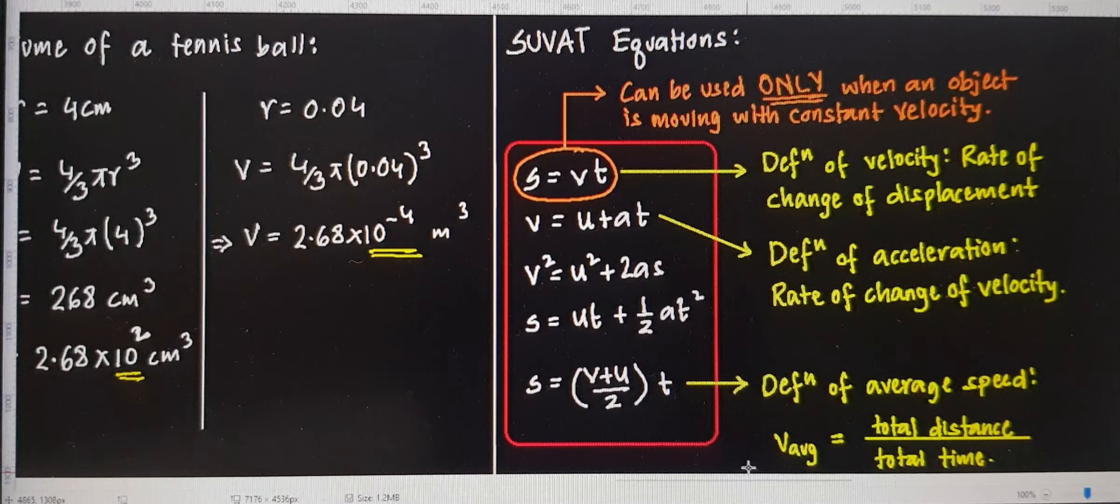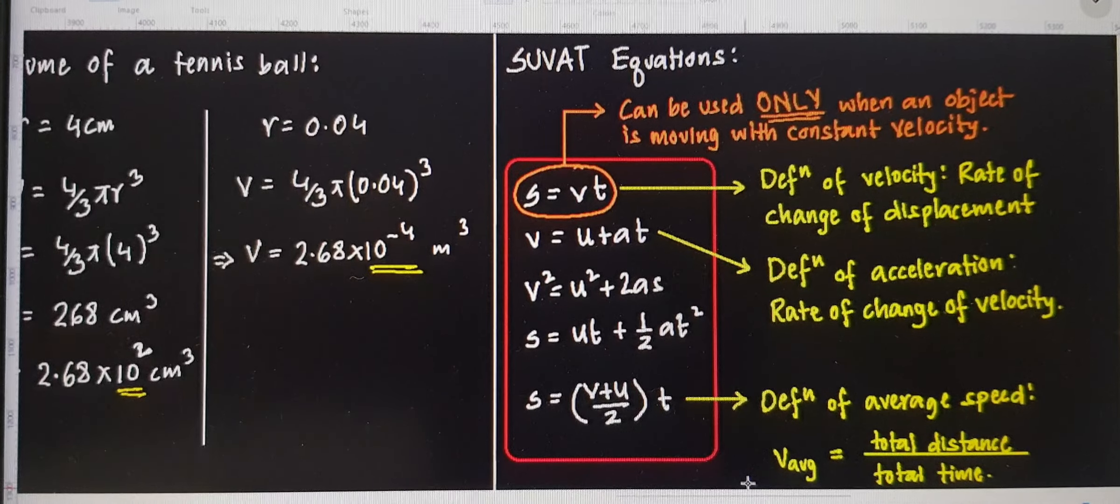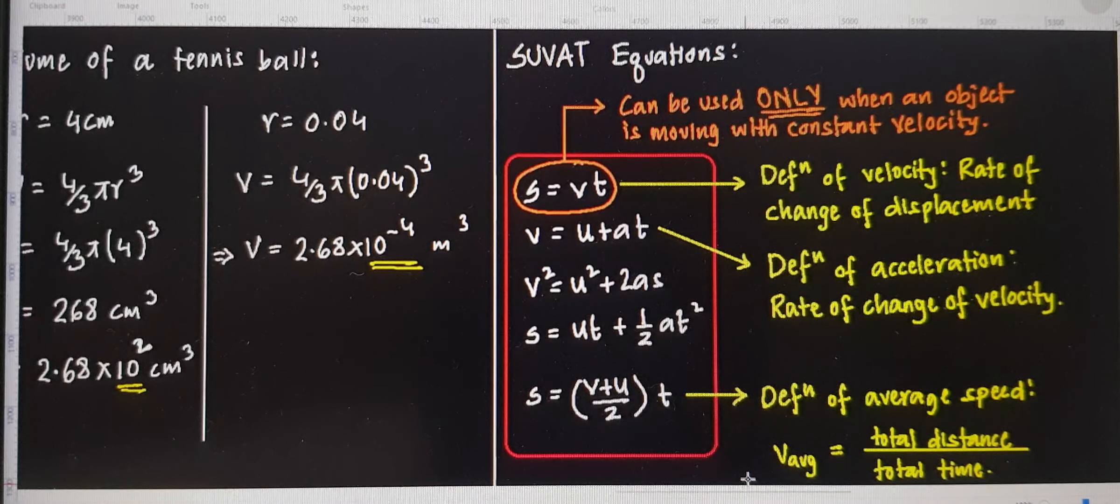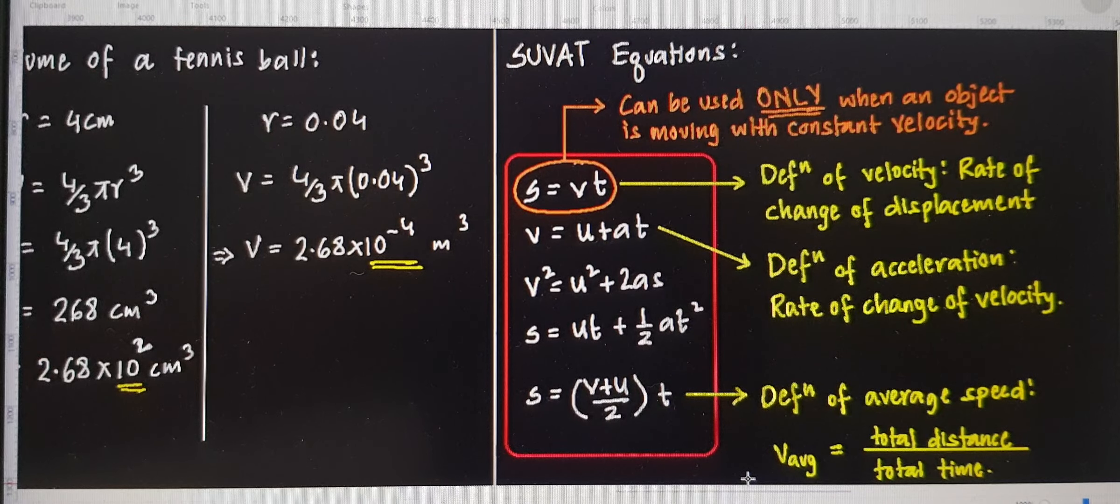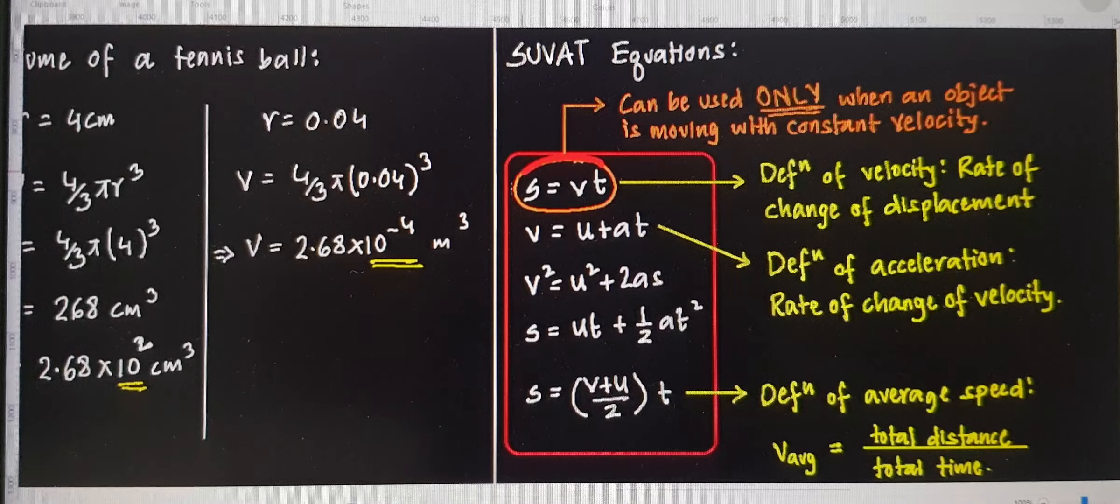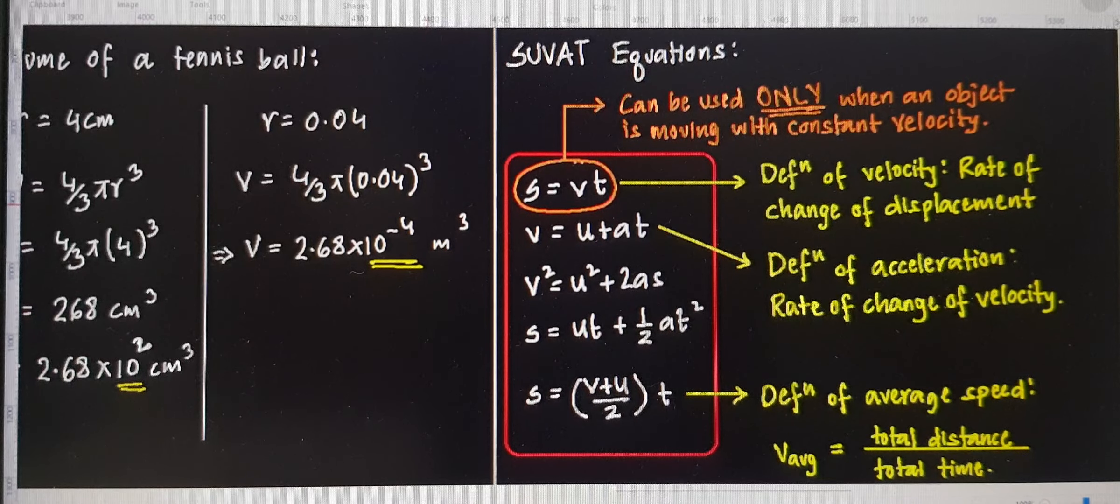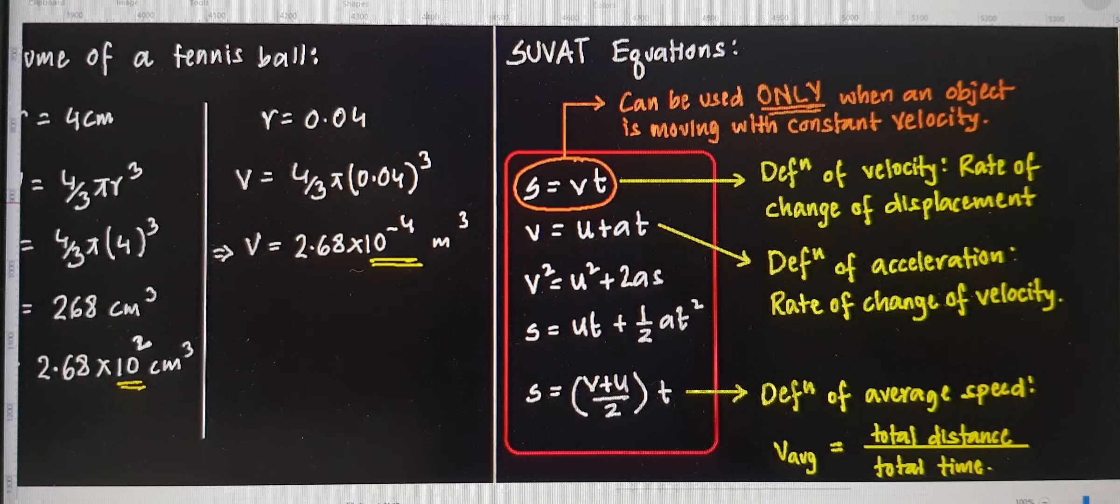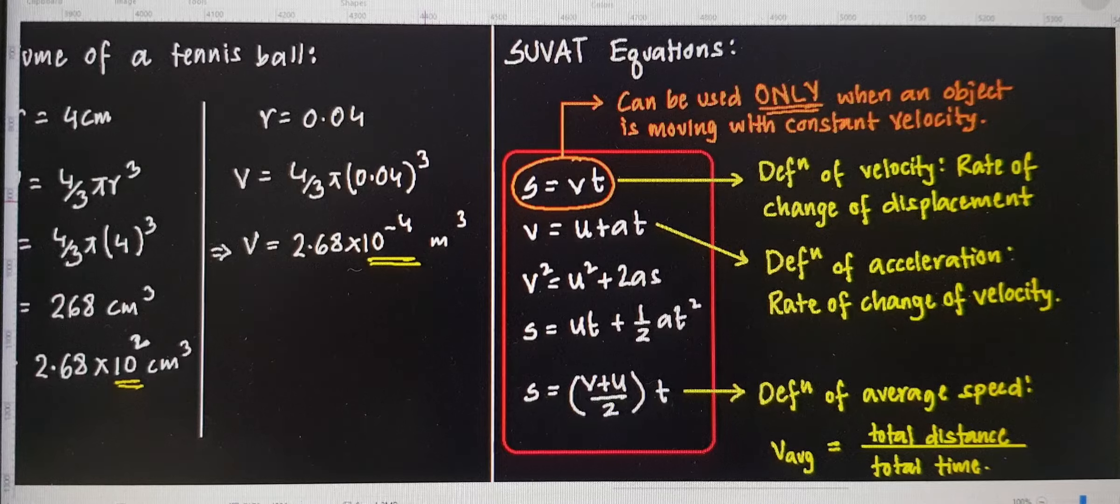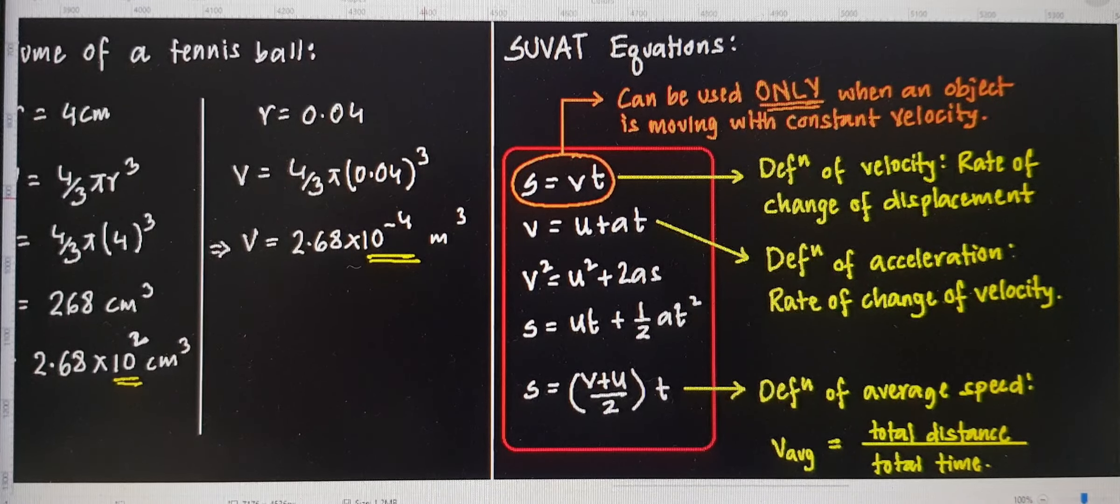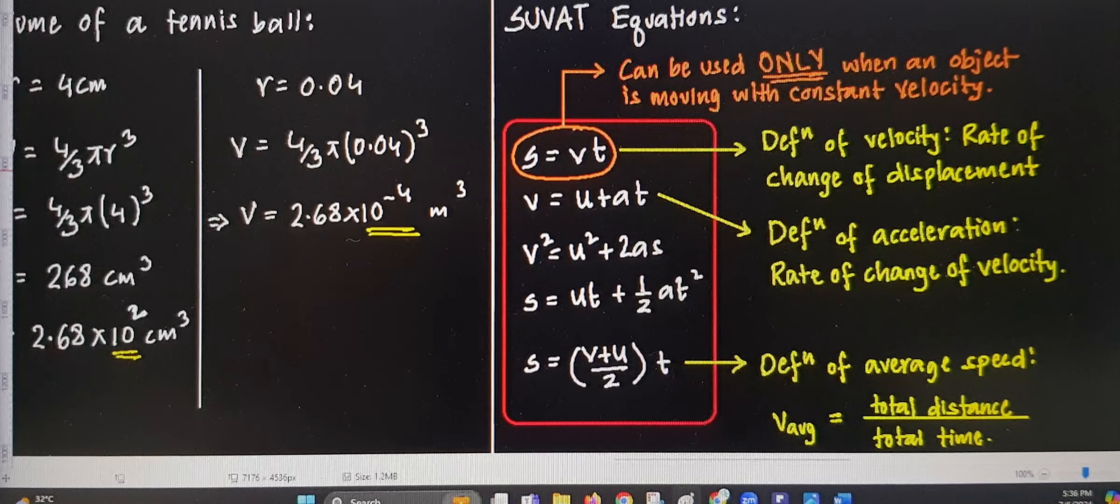So S equals to VT comes from the definition of speed: distance by time or velocity displacement over time. Now remember that this equation can only be used for an object moving with uniform speed. If there is acceleration or deceleration, don't use this equation. This equation is only applicable for constant speed. V equals U plus AT comes from the definition of acceleration. If you remember acceleration is defined as the rate of change of velocity. So mathematically acceleration equals V minus U over T. We get V equals U plus AT.